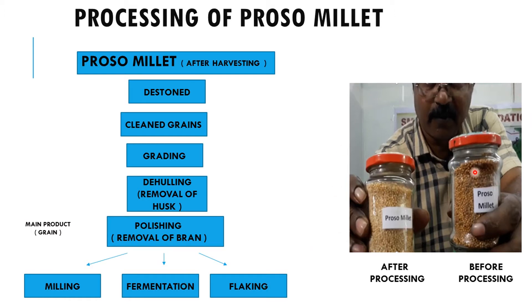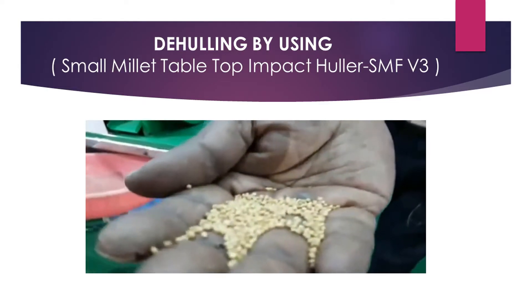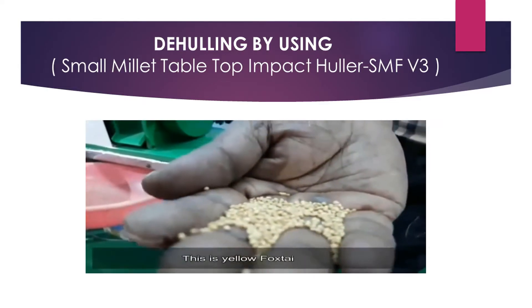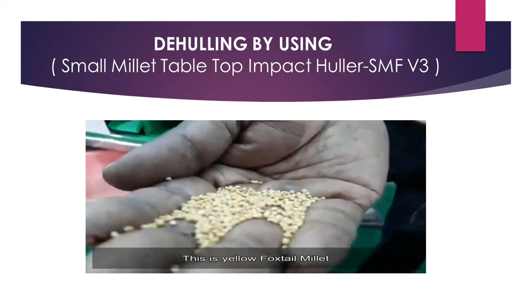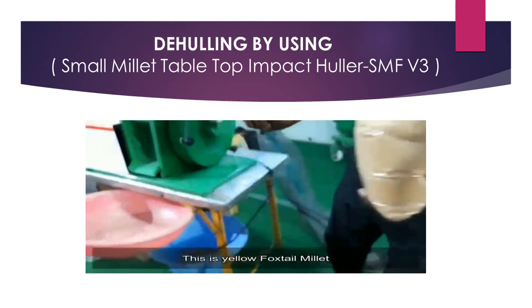Here we get the main product that is grain. After that we have three main operations: milling, fermentation and flaking. This is how the ProSomulets look before processing and after processing — you can refer to this image. There is color variation and size variation also.